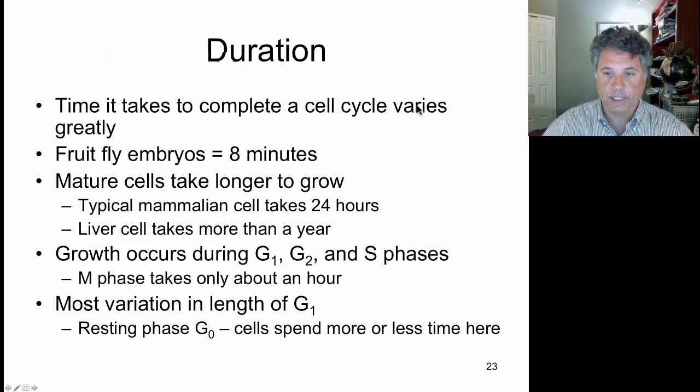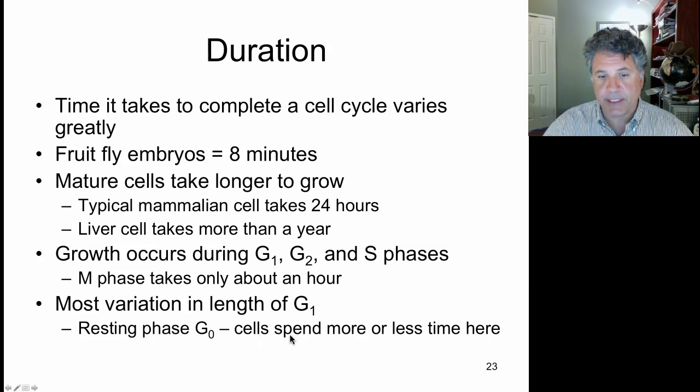When cells exit the cell cycle, they stop dividing and enter a phase which we call G0 or the resting phase. Cells can exit permanently from the cell cycle, never divide again and enter into a permanent G0, or they can rest in G0 and resume the cell cycle. They'll start dividing later if the appropriate signals arise and the cell will then respond by reinitiating the cell cycle.